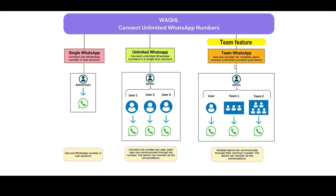Next, we have a team feature. If you have a team like a sales team or support team — for example, a sales team with three members — and all three members would like to communicate with the same WhatsApp number, they can do that with a single number. Sales1, sales2, sales3 can all log in with their own ID and see only their assigned customers' data, while all three communicate using the same number. You can use a separate number for the sales team no matter how many members you have.